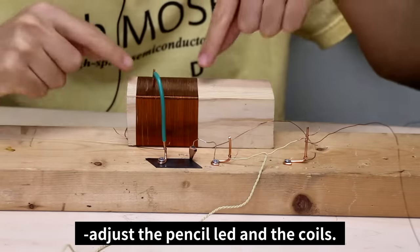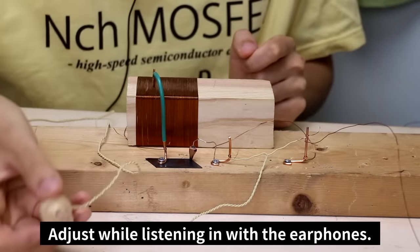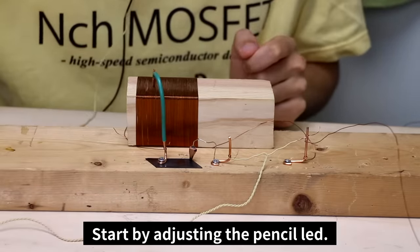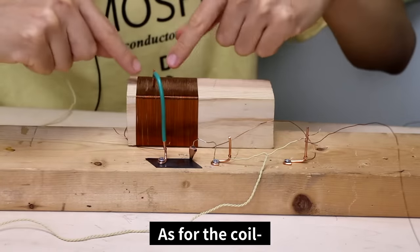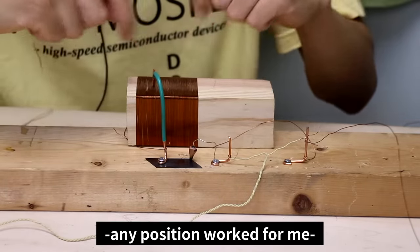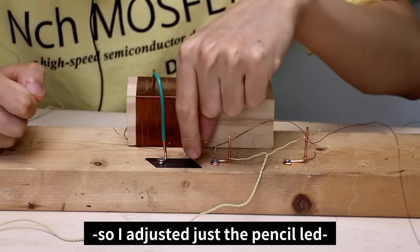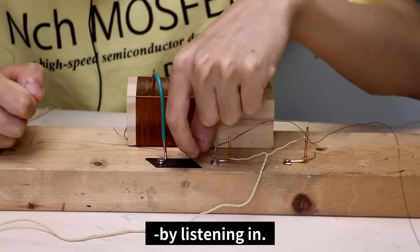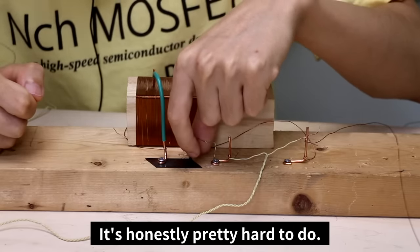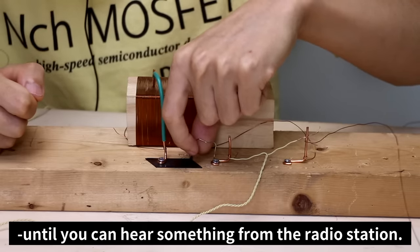Once the antenna and ground lines are ready, adjust the pencil lead and the coils. Adjust while listening with the earphones. Start by adjusting the pencil lead. As for the coil, any position worked for me, so I just adjusted the pencil lead by listening in.